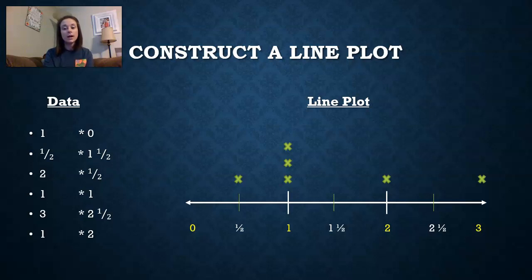An x above the 3. Another x above the 1. An x above 0. An x above 1 and a half. An x above 1. An x above 2 and a half. An x above 2. So as you can see, so far I have 4 x's above 1. That's how many times 1 occurred. If I go back to measuring insect lengths, I had 4 insects that measured 1 inch or I had 2 insects that measured a half inch. So I'm marking my frequency.